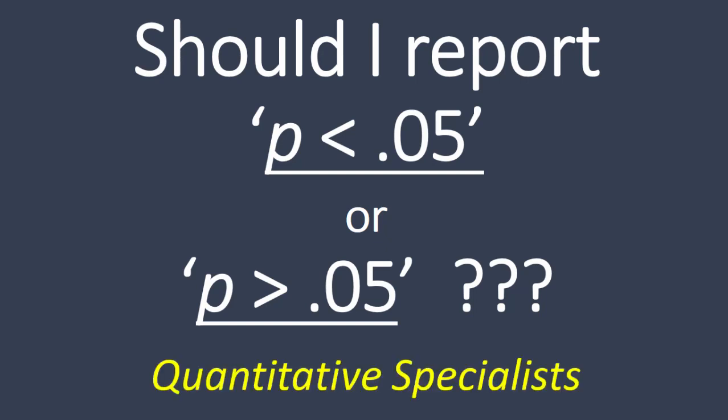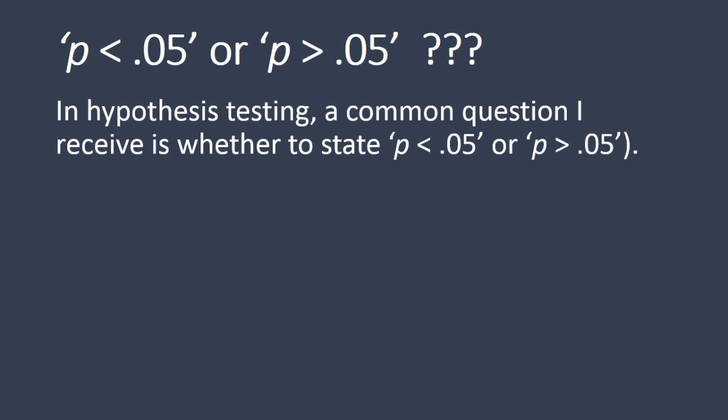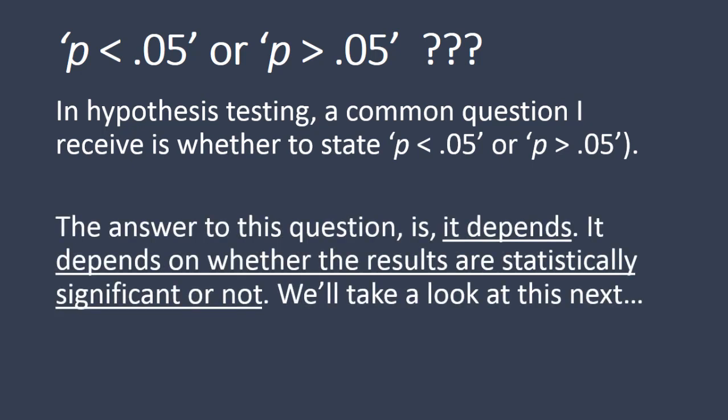In this video, we'll take a look at whether you should report P is less than 0.05 or P is greater than 0.05 in a given situation. In hypothesis testing, a common question I receive is whether to state P is less than 0.05 or P is greater than 0.05. The answer is it really depends — it depends on whether the results are statistically significant or not.